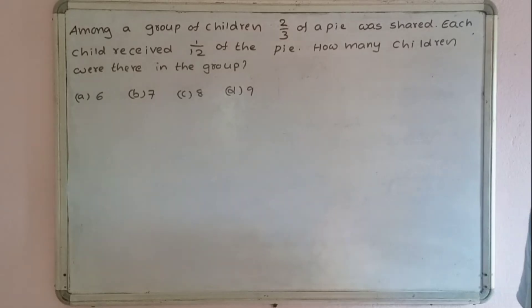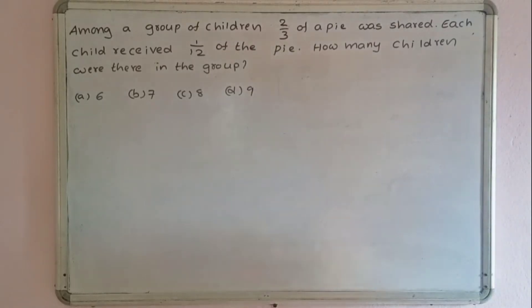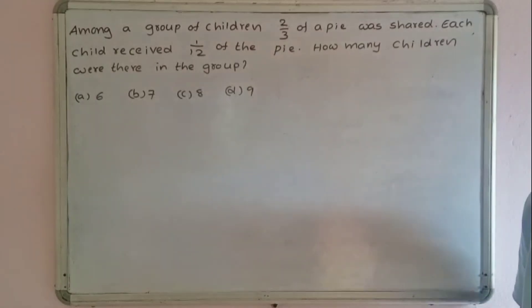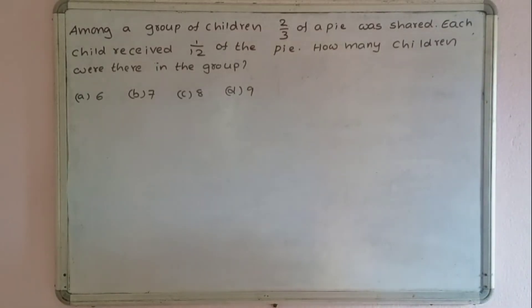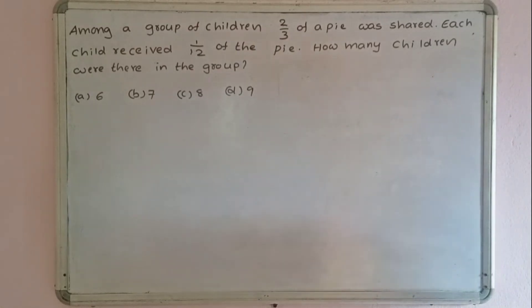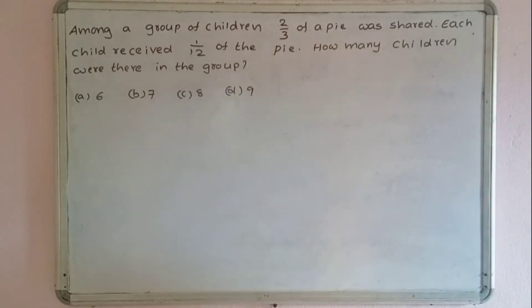Among a group of children, 2 by 3 of a pie was shared, and each child received 1 by 12 of the pie. How many children were there in the group?